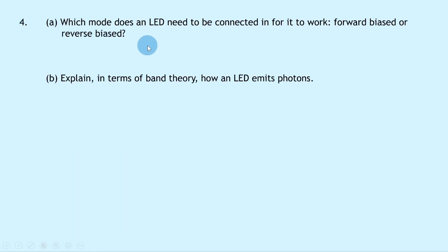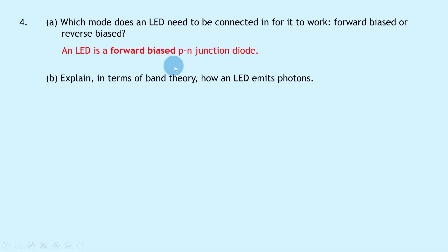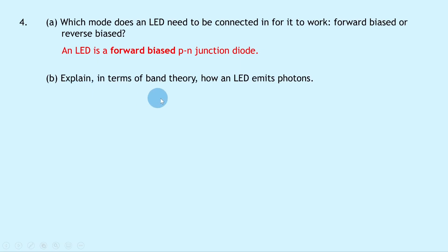Question 4a says which mode does an LED need to be connected in for it to work — forward biased or reverse biased? Remember an LED is a forward biased PN junction diode, so it needs to be forward biased for conduction to take place. Part B then says to explain in terms of band theory how an LED emits photons. This is a very common exam question, and remember when asked to explain something in terms of band theory, we need to use the three key words: electrons, valence band, and conduction band.